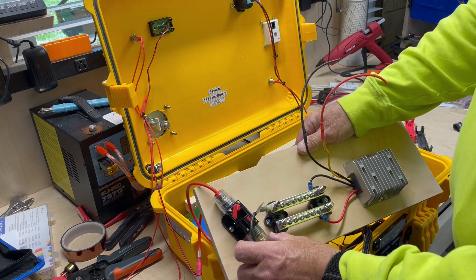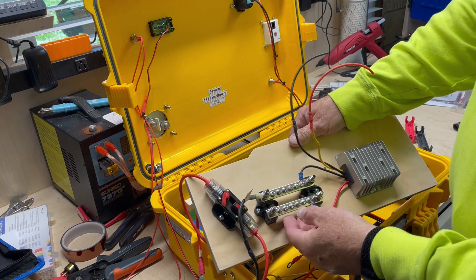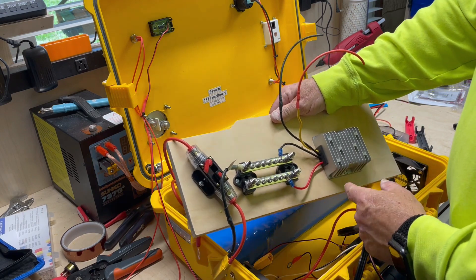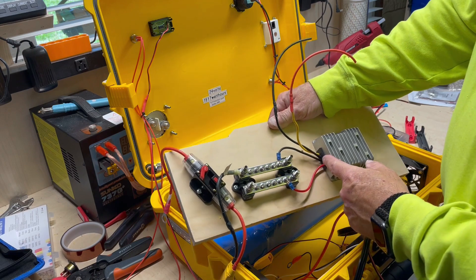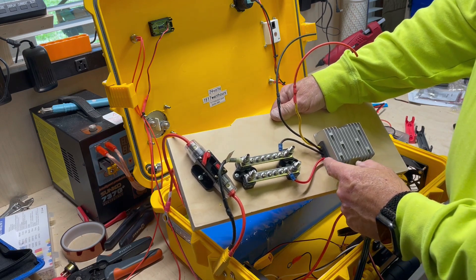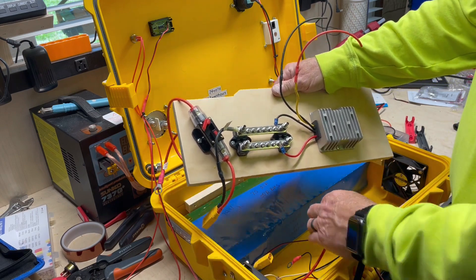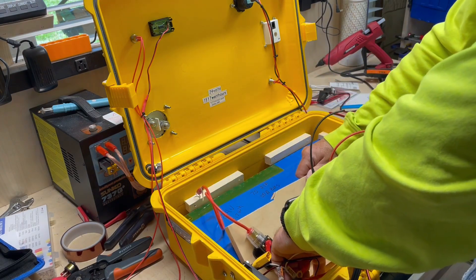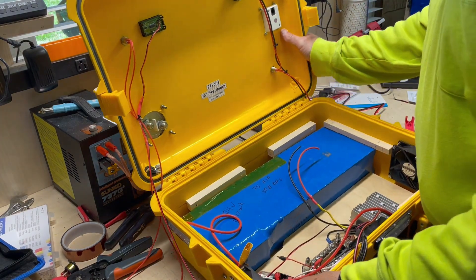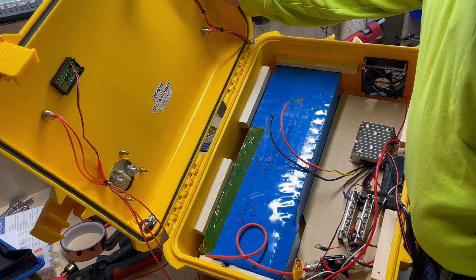I've already mounted one of my breakers and bus bar and the buck converter. Now, this will take it from 24 volts to 12 volts. And then I just raise all this up. And as you can see, that fits pretty snug in there.